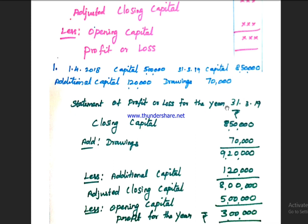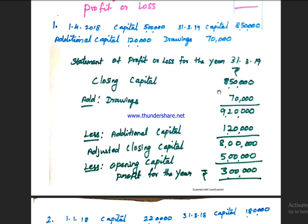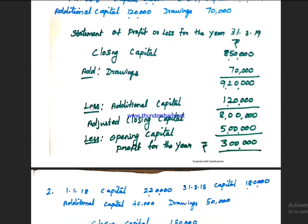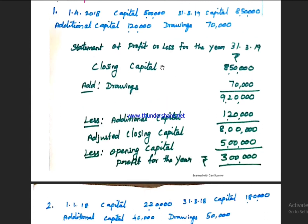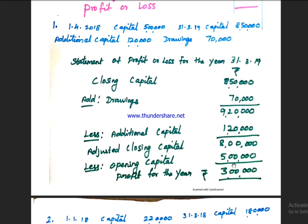Statement of Profit or Loss for the year ended: closing capital is 8 lakhs, add drawings 70,000, giving 8 lakhs 70,000. Less additional capital 1 lakh, and less opening capital 5 lakhs. Subtracting 8 lakhs from the adjusted figure gives 3 lakhs, which is the profit for the year.